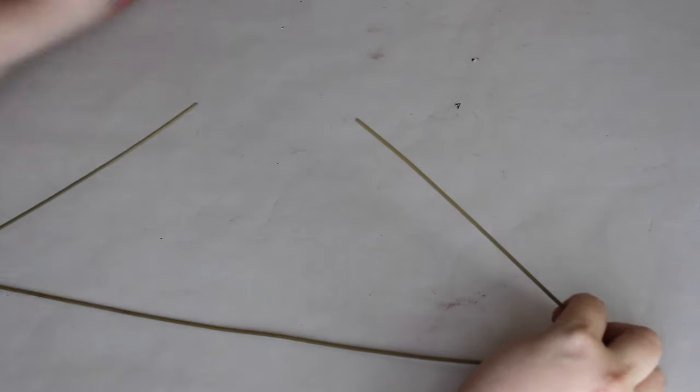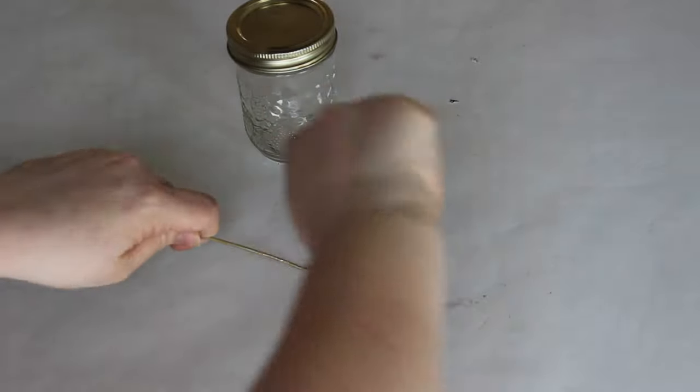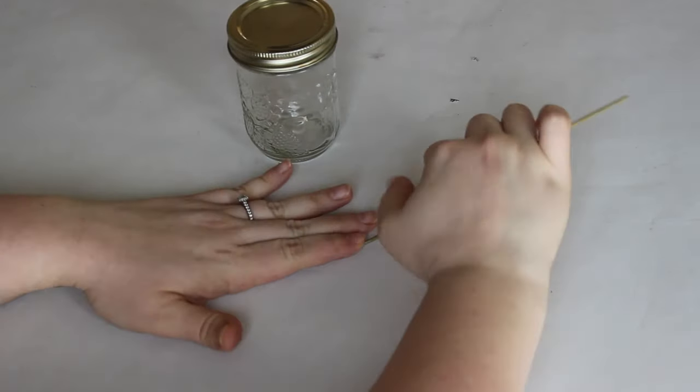Start by cutting the top off your hanger using your side cutters. Next you want to flatten out your hanger as best you can.